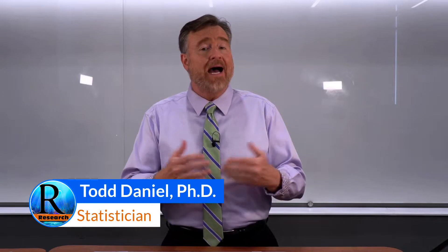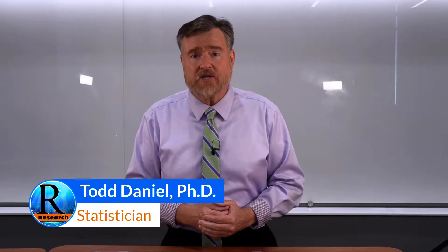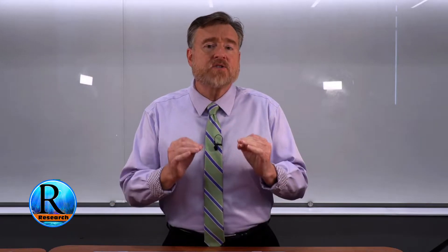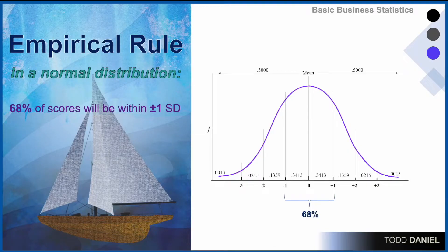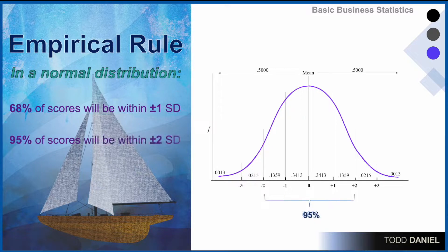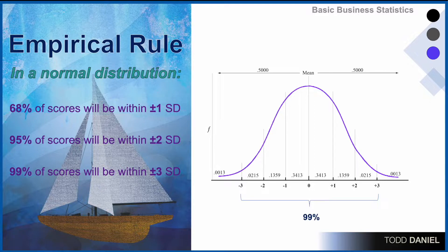Now that we understand more about the qualities of a normal curve, let me show you how we can use what we've learned in our calculation of probability. The empirical rule for a normal distribution states that 68% of scores will be within one standard deviation above or below the mean, 95% within two standard deviations, and 99% within three standard deviations. This is sometimes called the 68-95-99 rule, also called the empirical rule.